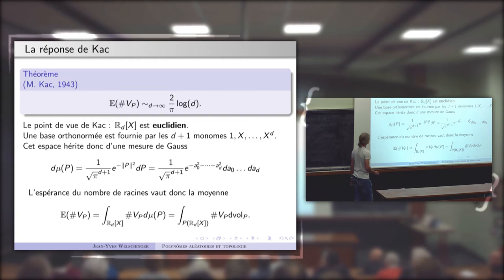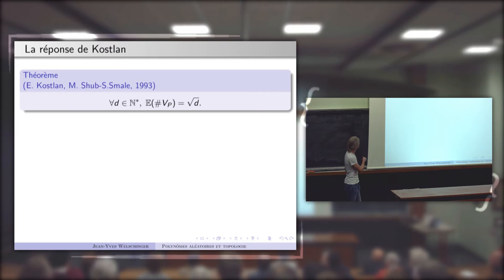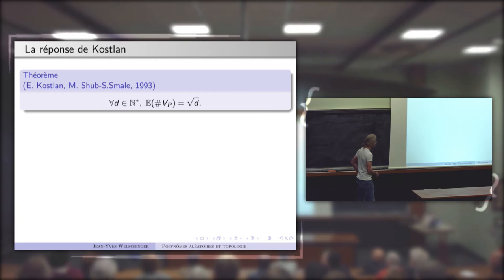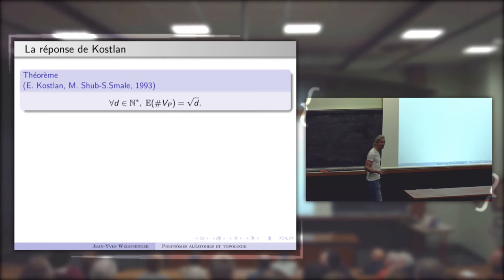Une deuxième réponse a été donnée 50 ans plus tard, par Eric Kostlan et Shub-Smale. La réponse est que pour tout degré, cette espérance mathématique est exactement √d. Le point de vue de Kostlan est tout à fait analogue : l'espace des polynômes de degré d est un espace vectoriel euclidien, mais avec un produit scalaire différent.